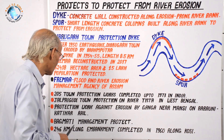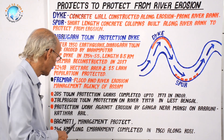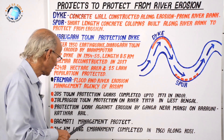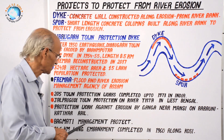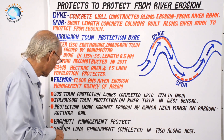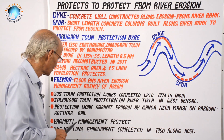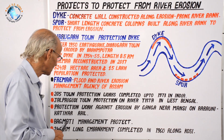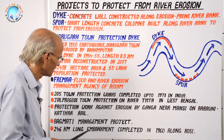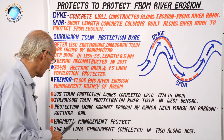Next is the Bagmati Management Project. River Bagmati originates in Nepal and joins river Kosi in Bihar. Kosi is a river causing frequent floods, to which Bagmati contributes a lot. To control flood and erosion by Kosi, Bagmati has also been managed — embankments, spurs, and dikes have been constructed on this river.